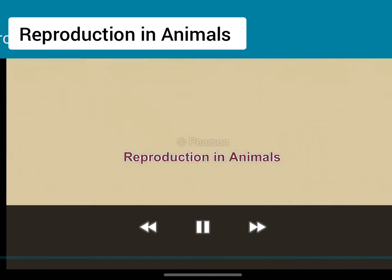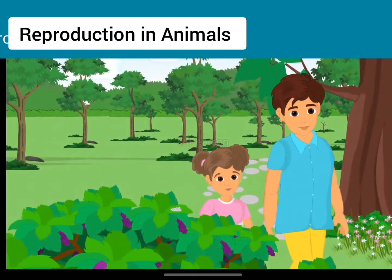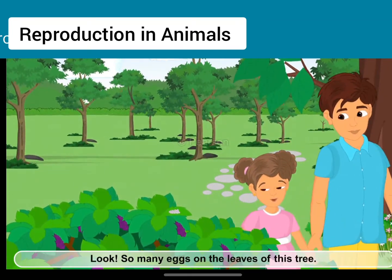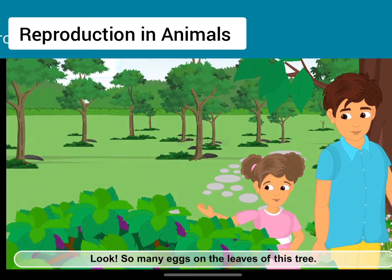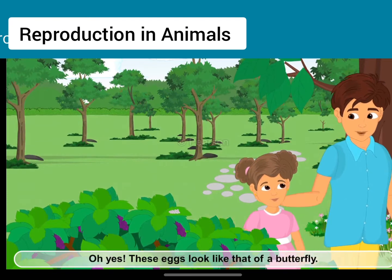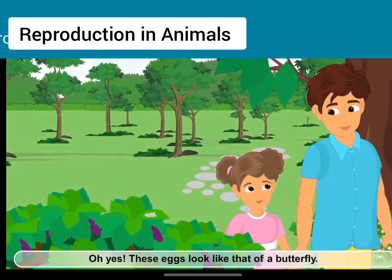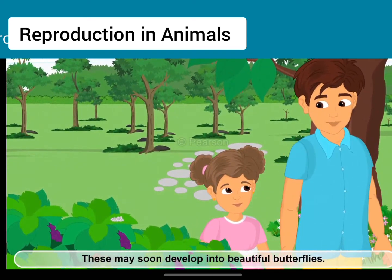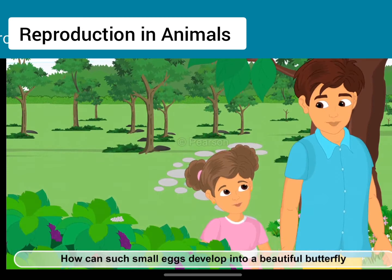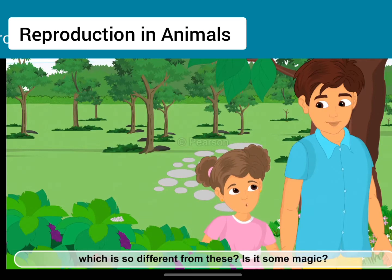Reproduction in animals. Look, so many eggs on the leaves of this tree. Oh yes, these eggs look like that of a butterfly. These may soon develop into beautiful butterflies. How can such small eggs develop into a beautiful butterfly which is so different from these?